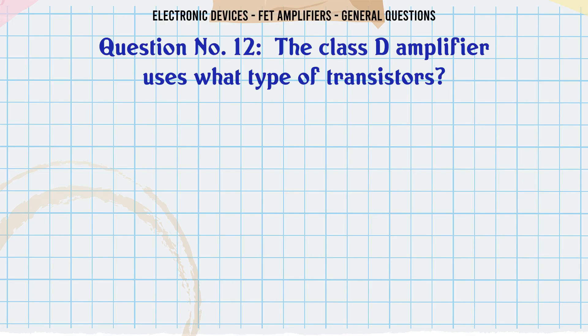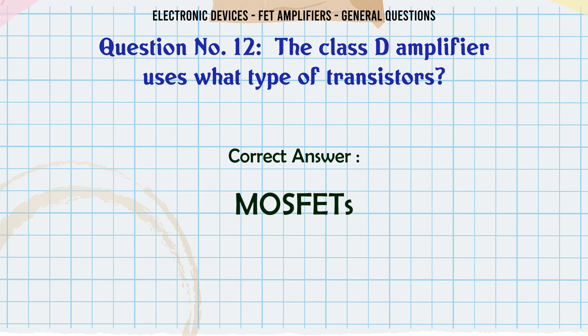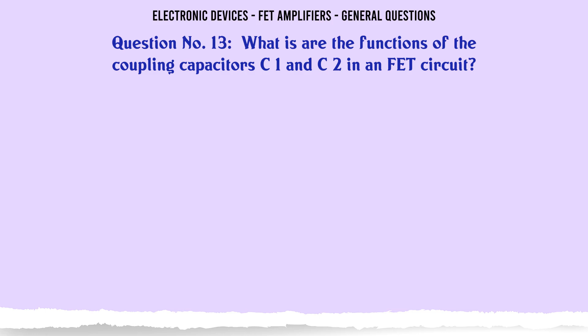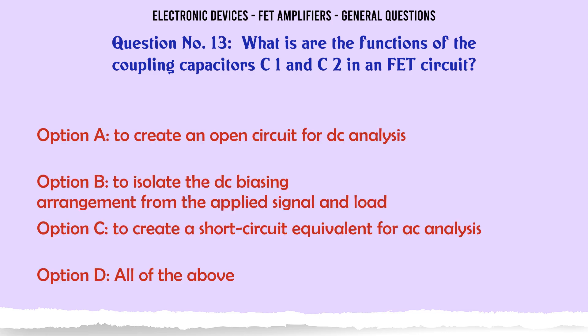The class D amplifier uses what type of transistors? A. JFETs. B. BJTs. C. MOSFETs. D. Any of the above. The correct answer is MOSFETs.